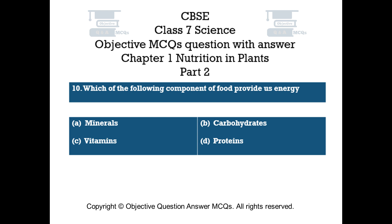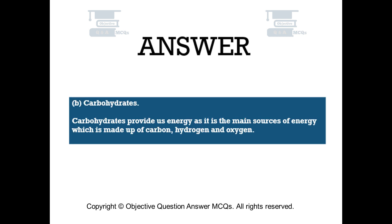Question number 10: Which of the following components of food provides us energy? Option A: minerals. Option B: carbohydrates. Option C: vitamins. Option D: proteins. The right answer is option B — carbohydrates. Carbohydrates provide us energy as they are the main source of energy, made up of carbon, hydrogen, and oxygen.